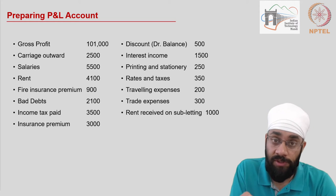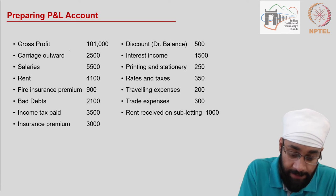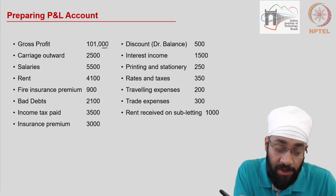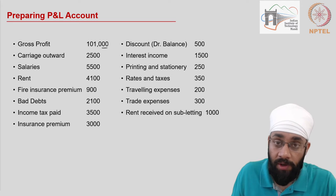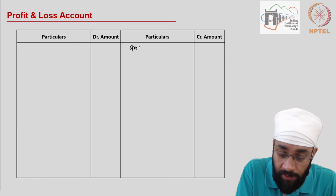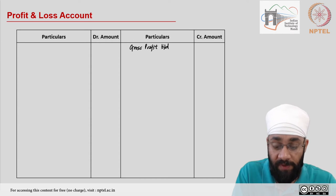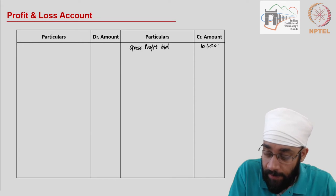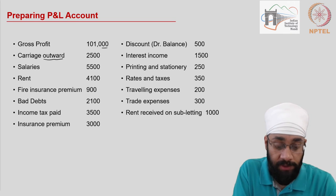The first item is gross profit. The gross profit is calculated in the first section of the profit and loss account. Let's say the first section was prepared in the trading account and we found the gross profit equal to one hundred and one thousand. So in the profit and loss account we write gross profit brought down — one hundred and one thousand is the gross profit.